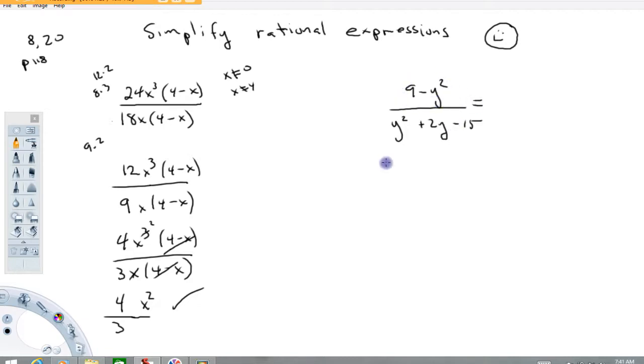So the top factors into (3 - y) and (3 + y) because this is the difference of two squares.